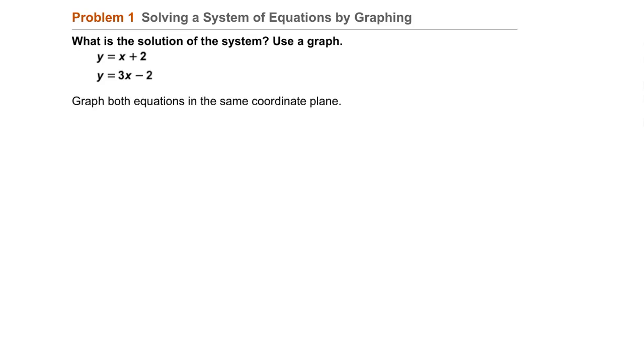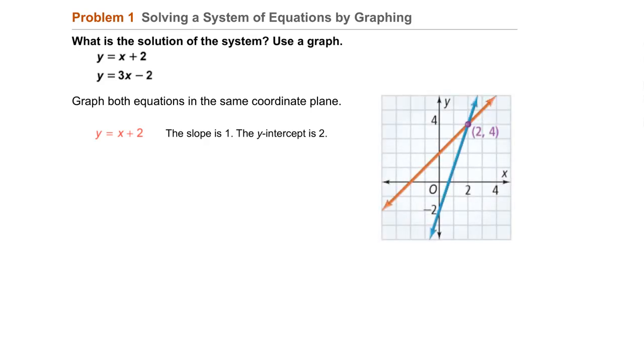We'll graph both equations in the same coordinate plane. First, y equals x plus 2. We can identify the slope as being 1, and the y-intercept is 2, and graph that as shown at the right, the orange line.